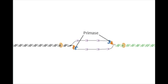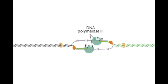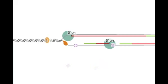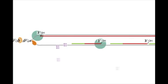An enzyme called primase synthesizes short RNA primers to allow DNA synthesis to begin. DNA polymerase 3 synthesizes DNA beginning with the free 3' hydroxyl group on the last RNA nucleotide of the primer. Because the two nucleotide strands of DNA are anti-parallel, replication takes place continuously on one strand — the leading strand — and discontinuously on the other — the lagging strand. The short lengths of DNA produced by discontinuous replication of the lagging strand are called Okazaki fragments.